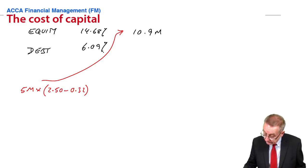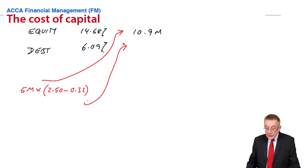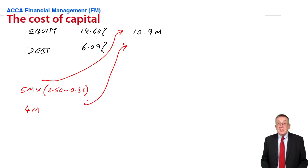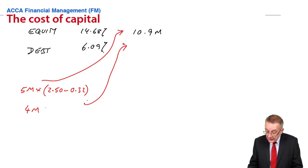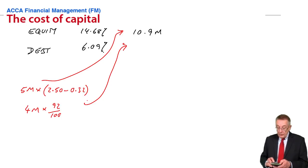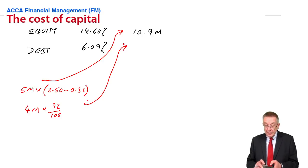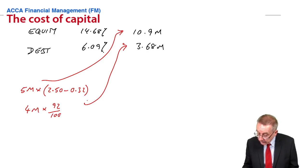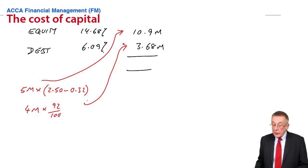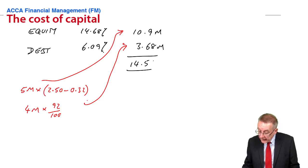What about the debt borrowing? There's 4 million nominal value of debt. The market value is 92 for every 100 and it is ex-int. So the market value: 4 million, 92 for every 100 nominal, is 3.68 million. The total market value of the company, the total market value of all the borrowing, is 14.58 million.